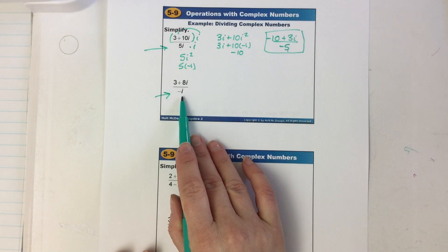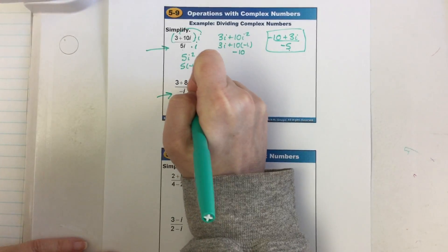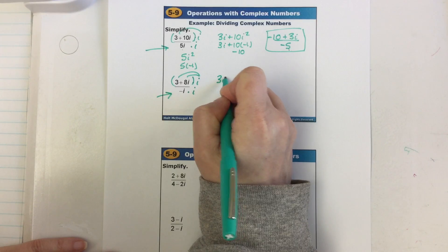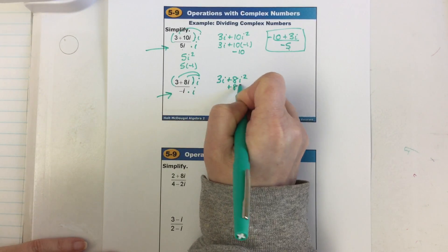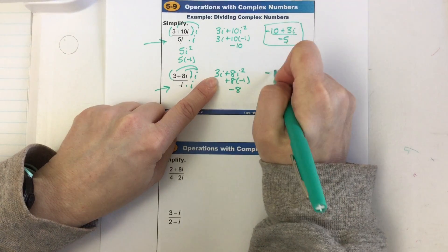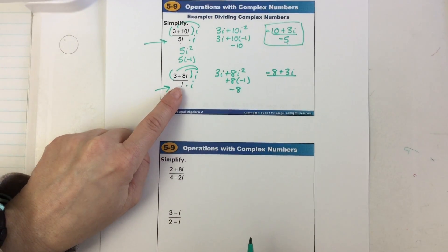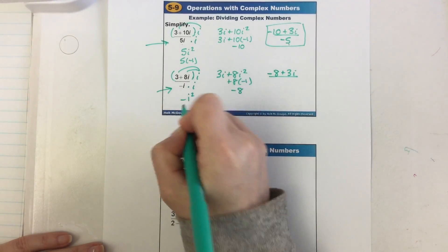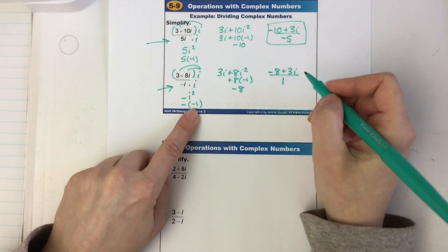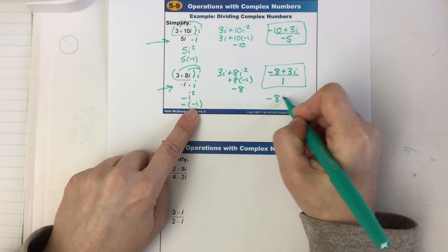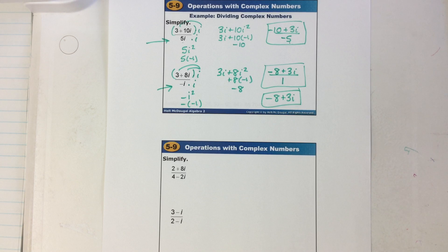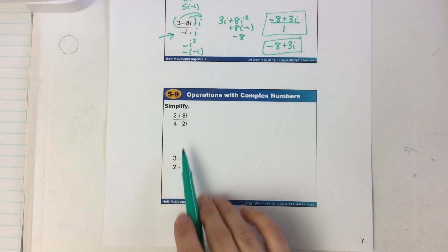One more with a single term on the bottom: multiply top and bottom by i. On the top, distribute i times two terms: 3i plus 8i squared. Change i squared to negative one: positive eight times negative one is negative eight. So the numerator is −8 + 3i. The bottom: negative i times i is negative i squared; i squared becomes negative one; negative times a negative is positive one. Anything divided by one doesn't change, so you end up with just the numerator: −8 + 3i.